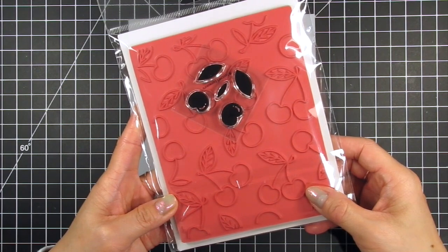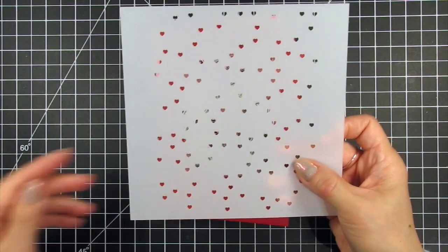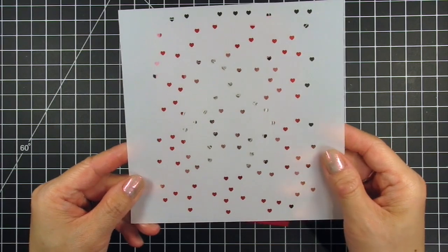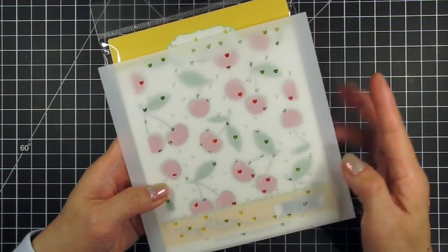There are two sizes of cherries and three sizes of leaves. Next is the Very Cherry stencil which are little hearts that fill in the space around the cherries on the cling stamp.